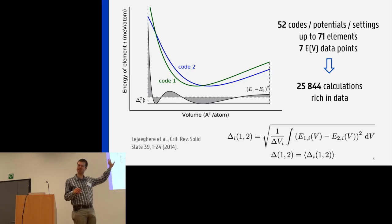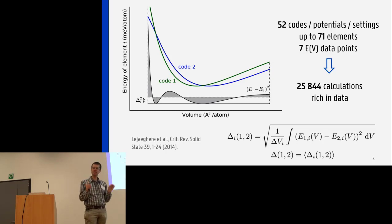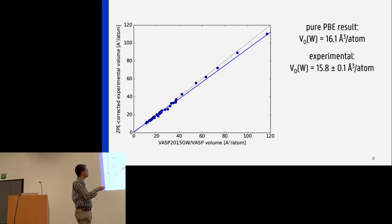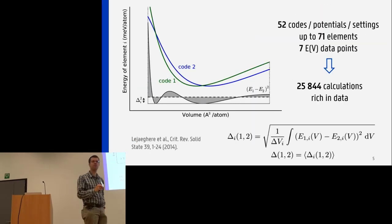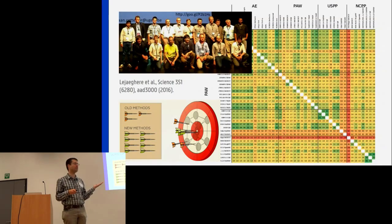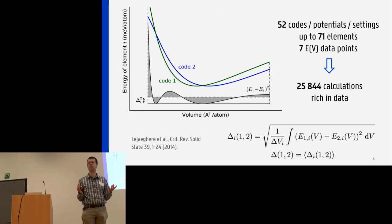Let's keep it at 52 different methods for the mathematics. 52 methods looked at 71 elemental crystals, and for each element we asked for seven calculations — seven volume points for which the energy was calculated to reconstruct an equation of state. Taking all of this together, we get almost 26,000 data points, 26,000 calculations. The only thing we currently extract from that is this matrix. I hope you feel there's much more data in this comparison than a single Delta number.